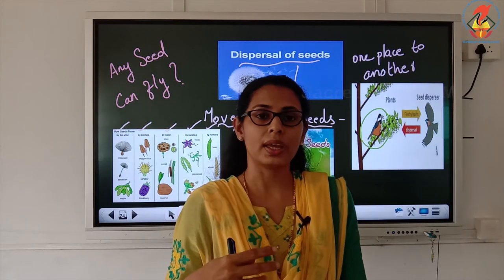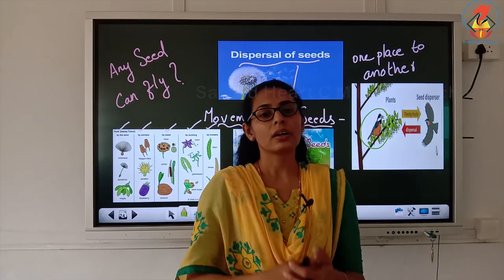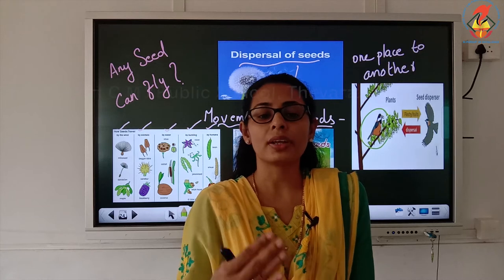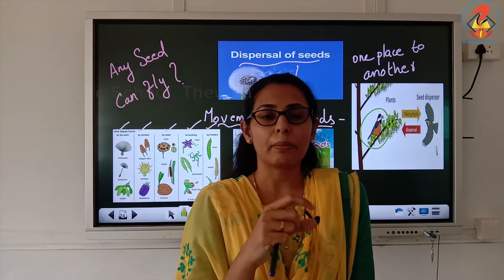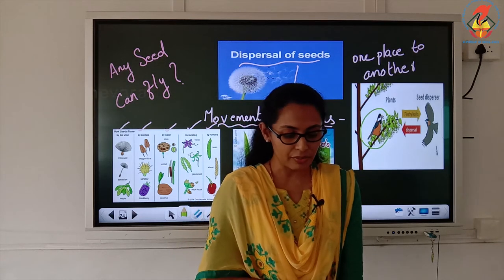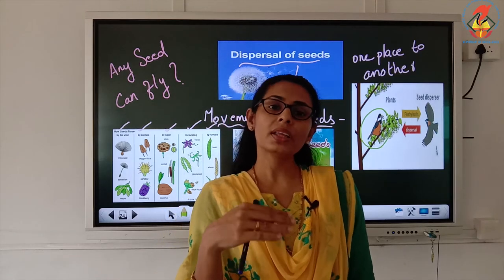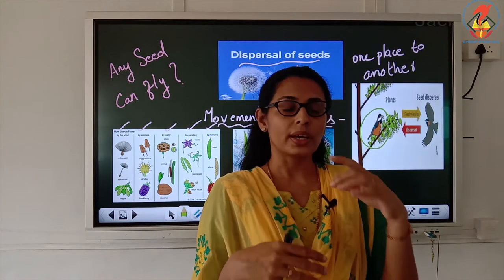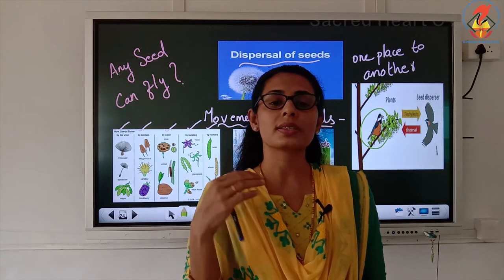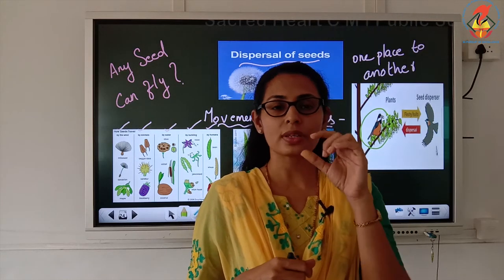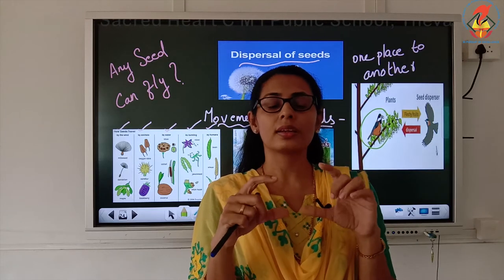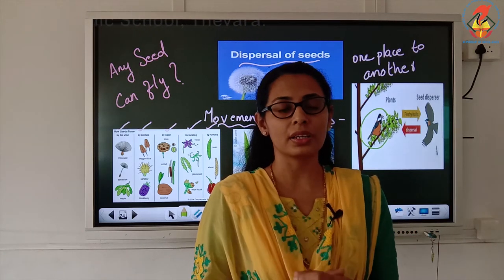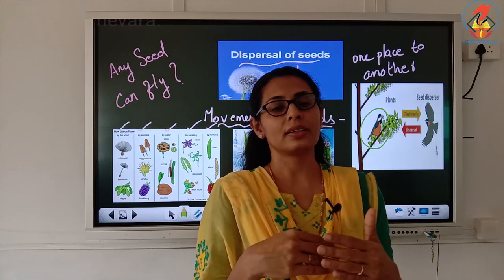This movement of seeds has been happening from generations. And one such seed movement actually led to a new invention — that invention is known as Velcro. This happened in the year 1948 in America. A man went for a walk with his pet dog, and when they returned, he found that some seeds were stuck on his coat and on the fur of his dog.